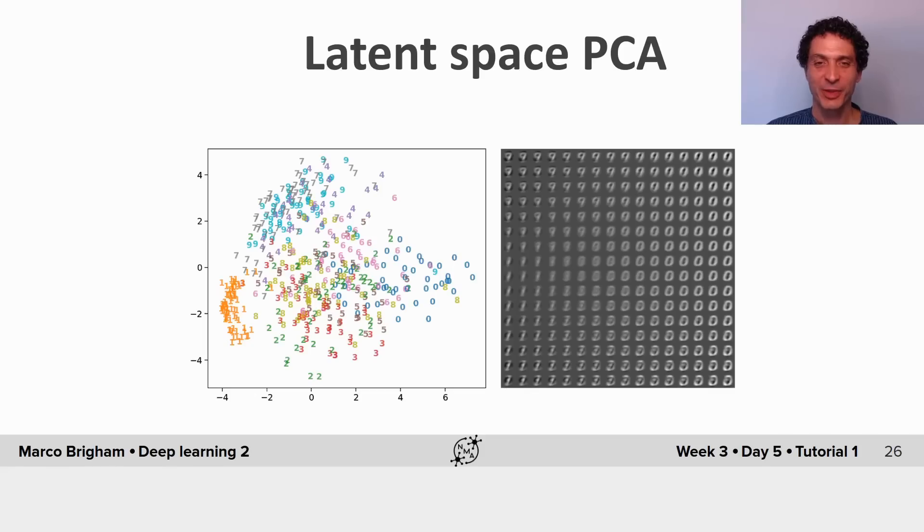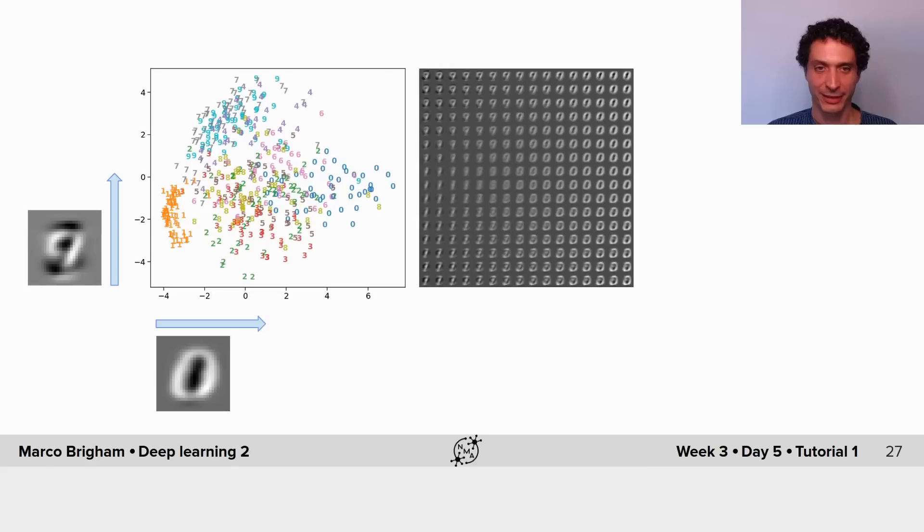This is the representation of PCA in latent space where we see that digit class 1 is well separated from digit class 0 in the principal component axis 1, and the other digits are not so well separated in principal component 1, 2 where we see 9s and 7s here on top, 2s and 3s here in the bottom.